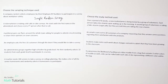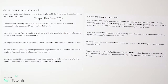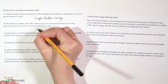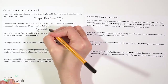A telemarketer making cold calls starts with the first name in the phone book and chooses every fifth person after that to call. Remember, that's where every nth person is chosen after people are put in an order — in this case alphabetical order, using the phone book and choosing every fifth person. So that is a systematic random sample.